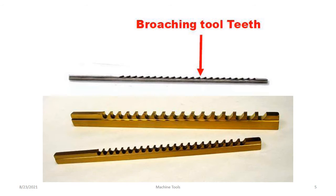Looking at the broaching tool teeth, you can see the cutting edges gradually. The height will be decreased. These are the cutting tools — one, two, three, four, five, six — it is called a multipoint cutting tool. The broaching tool has more than one point to cut or extract material from the workpiece, which is why it is called a multipoint cutting tool.